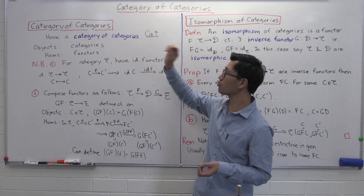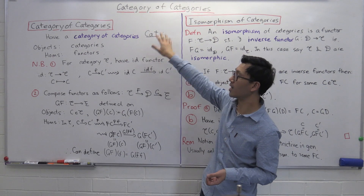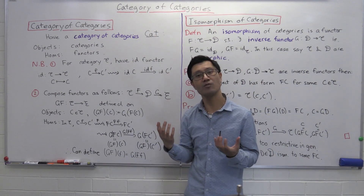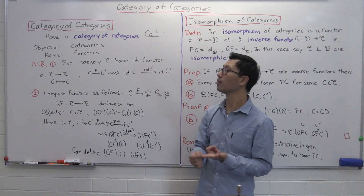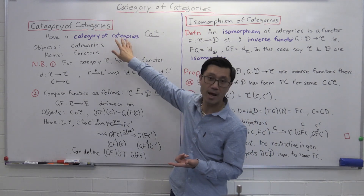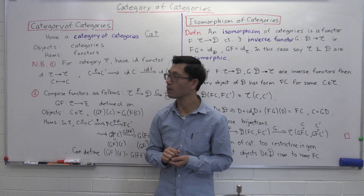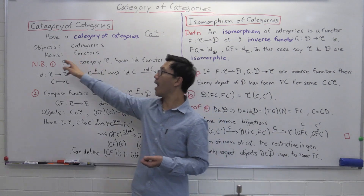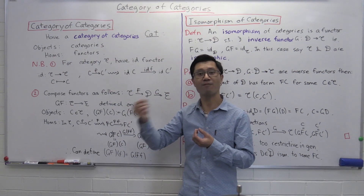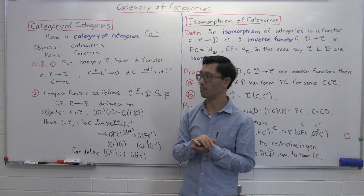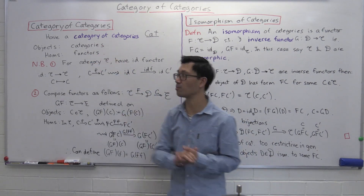Let me describe this category of categories, which is denoted with an underline. As usual, I have to tell you what the objects are and what the Homs are. The objects, as suggested by the name of this category, are just categories themselves. And the Homs — if you're given two categories, you can talk about functors between them. So Homs between two categories are just the functors between them.